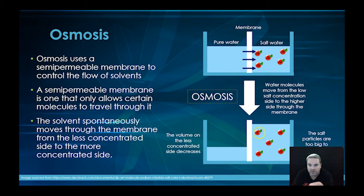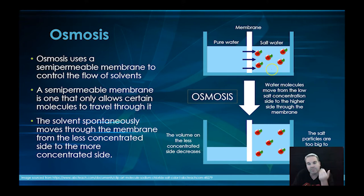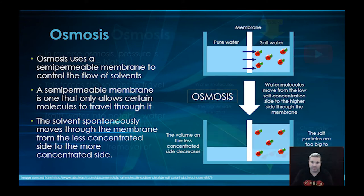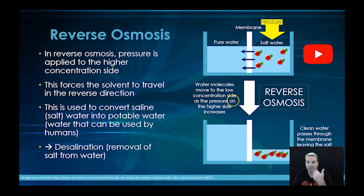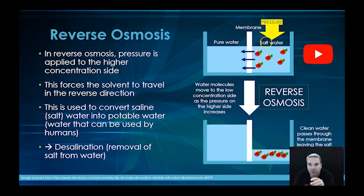The sodium chloride salt particles are too big to go back through the membrane — only the smaller water molecules can — and that's the purpose of a semi-permeable membrane: you only want small molecules to go through, not large ones. In reverse osmosis, we put pressure on the more highly concentrated side.